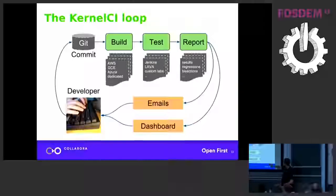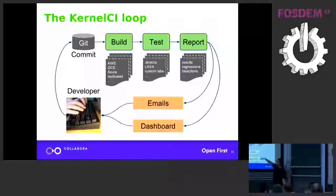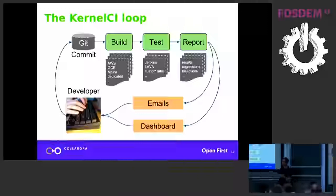So where are we now with Kernel CI? Developers push changes - typically maintainers, but individual trees as well. There are about 100 branches monitored by Kernel CI, from mainline to individual developers. Changes are detected and built across various servers, currently all managed by Jenkins. Then all these kernels are tested to see if they boot, and we also have some functional tests. Most of the time it uses LAVA to test all these kernels and capture results, with a couple of non-LAVA labs as well.